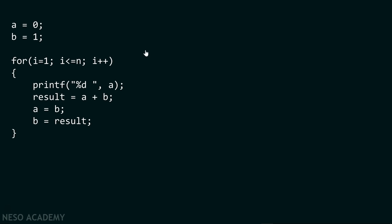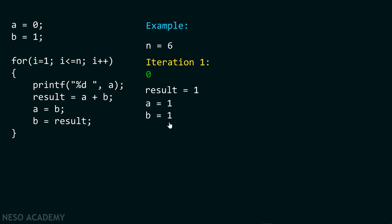Let's trace through with n equal to 6. In iteration 1, we print a which is 0. Result becomes 0+1=1, then a becomes 1 and b becomes 1. In iteration 2, we print a which is 1. Result becomes 1+1=2, then a becomes 1 and b becomes 2.